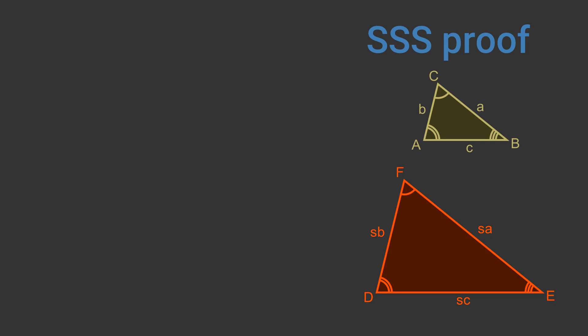We will now prove the second rule, the SSS rule. In these two triangles the smaller triangle has sides A, B, C. The larger triangle has sides S times A, S times B and S times C where S is the scale factor between the two triangles. For example, if the larger triangle is twice as big as the smaller triangle S will be 2. The sides are all in the same proportion, we need to prove that the angles are equal. We will use the cosine rule for this.